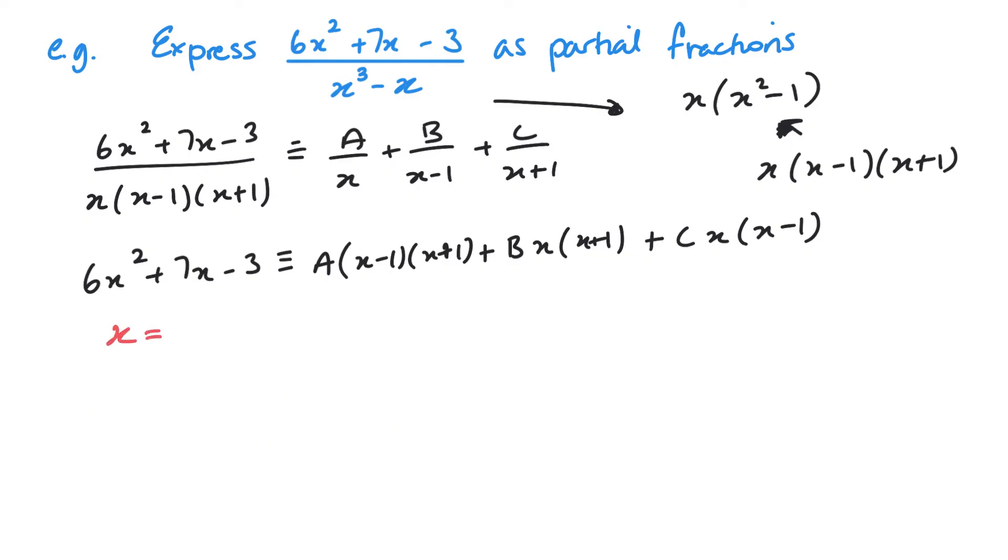Next, I want to substitute in negative 1. So substituting in negative 1 on the left, I get 6 times negative 1 squared plus 7 lots of negative 1 minus 3. Now negative 1 is going to make this bracket 0 so A is going to go, and this bracket 0 so B is going to go. That's going to give me C times negative 1 times negative 1 minus 1. On the left, I've got 6 take away 7 take away 3, which gives me minus 4. On the right, I've got minus 1 multiplied by minus 2, which gives 2C. Therefore, C is negative 2.